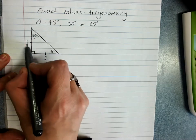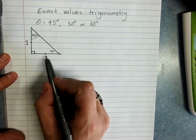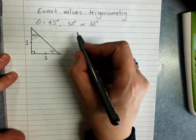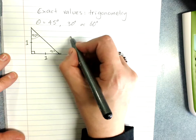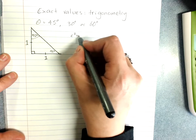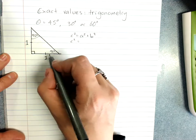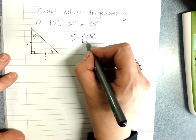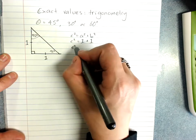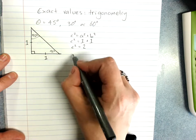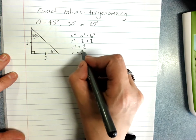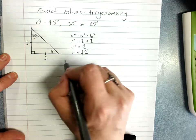Now, since our two sides have a length of 1, we can find our hypotenuse using Pythagoras. c² = a² + b². c² is 1² which is 1 plus 1. c² is 2. So c is the square root of 2 as an exact value.